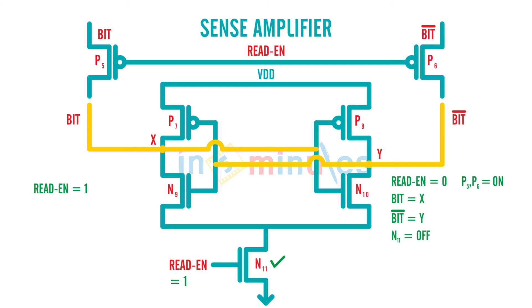If we remember the start of this clip, we discussed that bit, because we wanted to read a 0 at A, has gone slightly below VDD, which is nothing but VDD minus delta V. And bit bar at the same time was nothing but VDD. So let's give some numerical values to this. Bit is nothing but 1.6 and bit bar is nothing but 1.8.